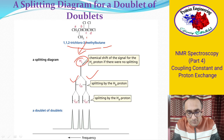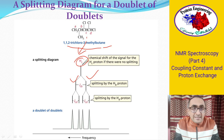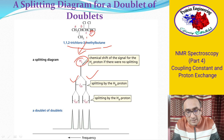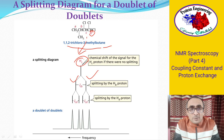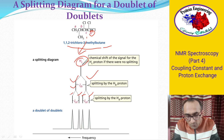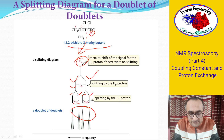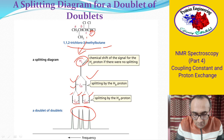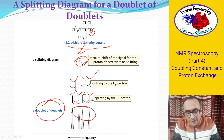Then, because the D proton is also in the neighborhood, D splits each of those doublet peaks into another doublet — giving four peaks in total. The coupling constant for this second splitting is JCD. The result is four peaks of equal intensity, which is called a doublet of doublet.